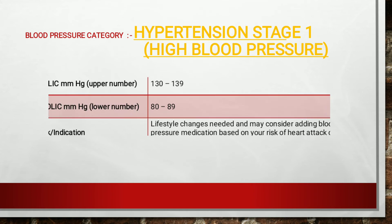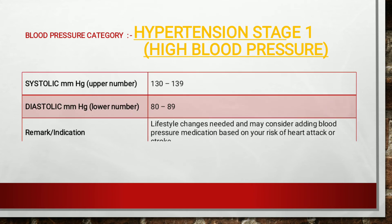Moving to hypertension stage 1, or high blood pressure. Here the values for systolic blood pressure are 130 to 139 mmHg, whereas the diastolic range is 80 to 89. This indicates that lifestyle changes are needed, and there may be a need to add blood pressure medications based on the risk of heart attack or stroke.